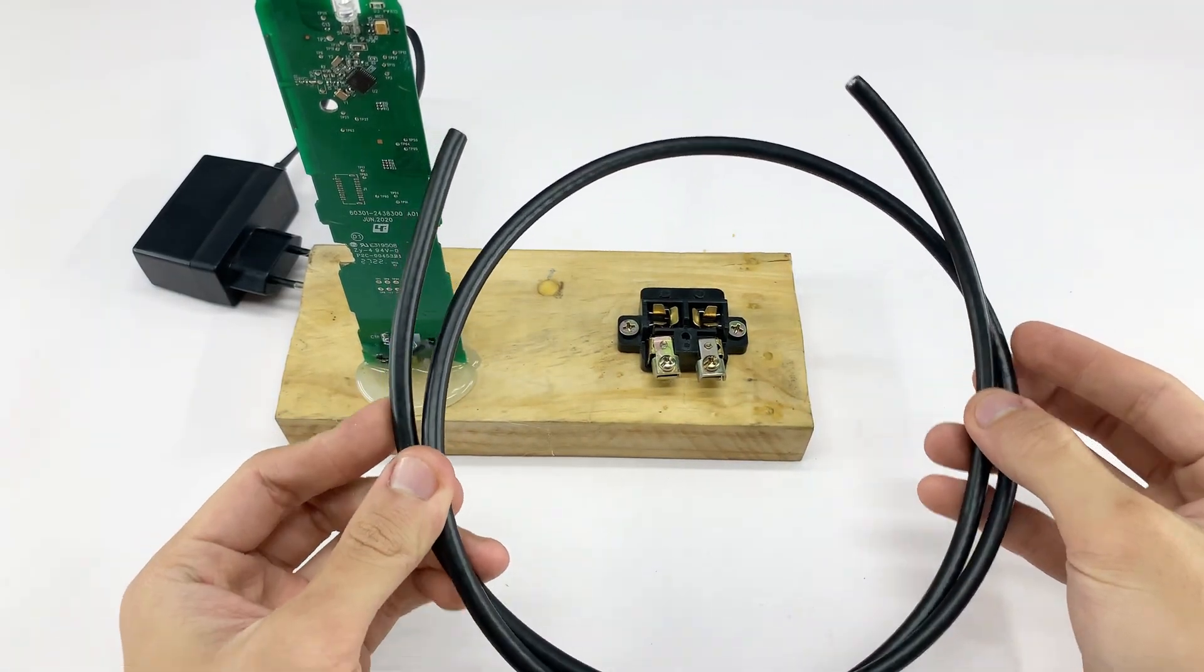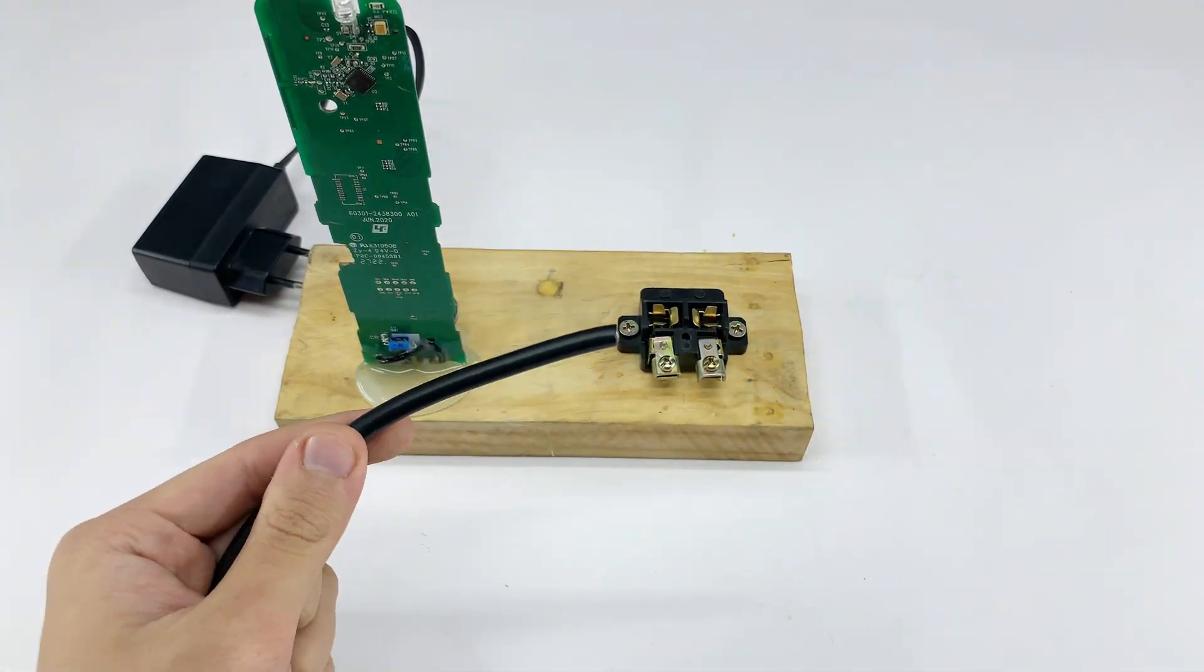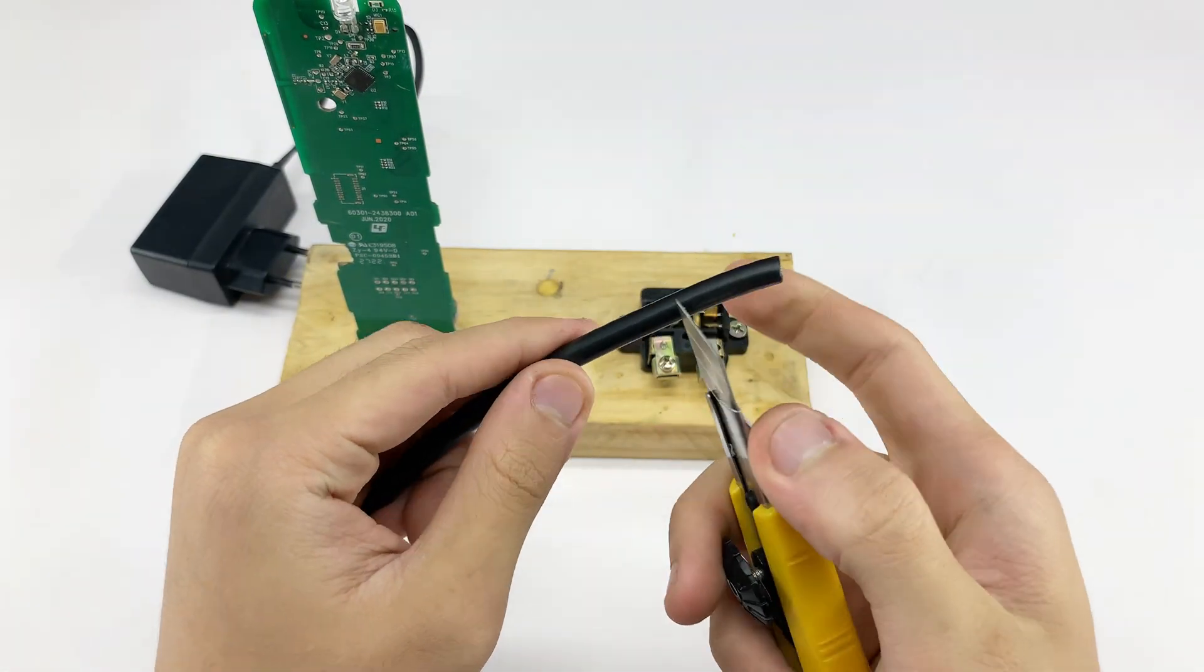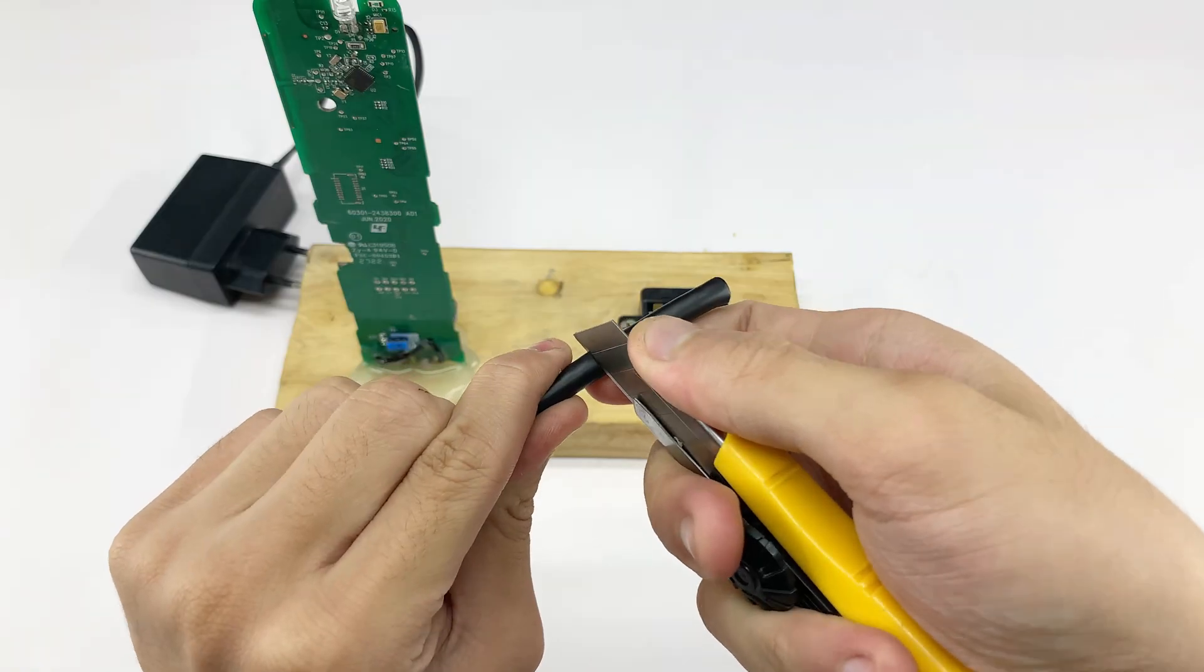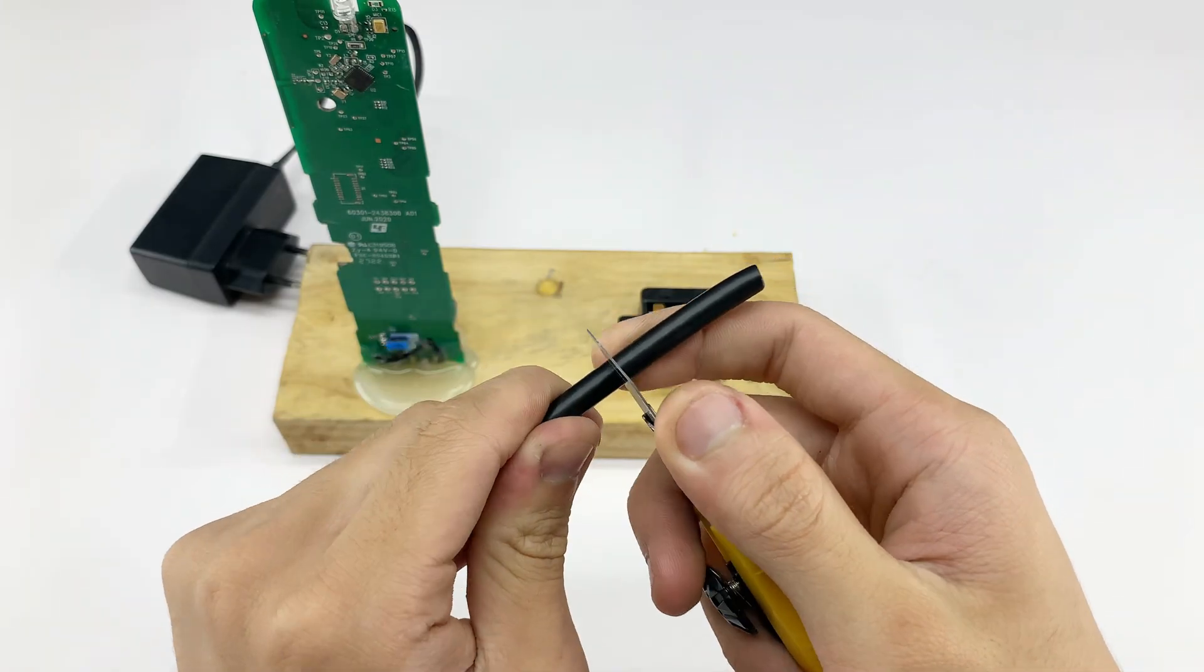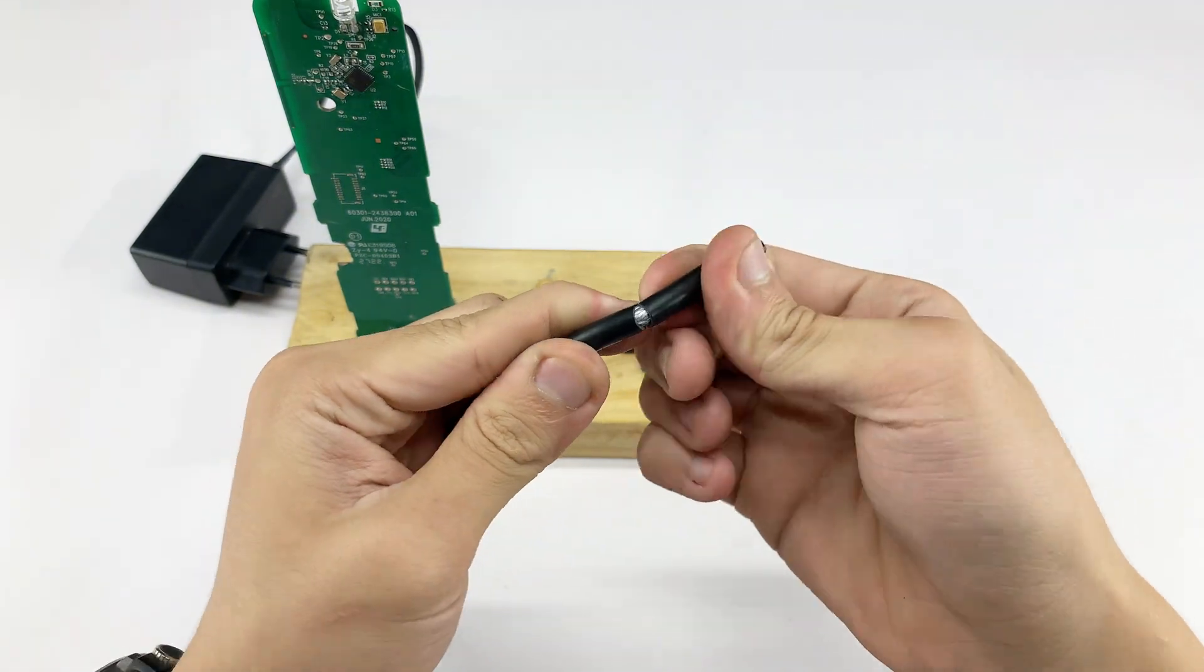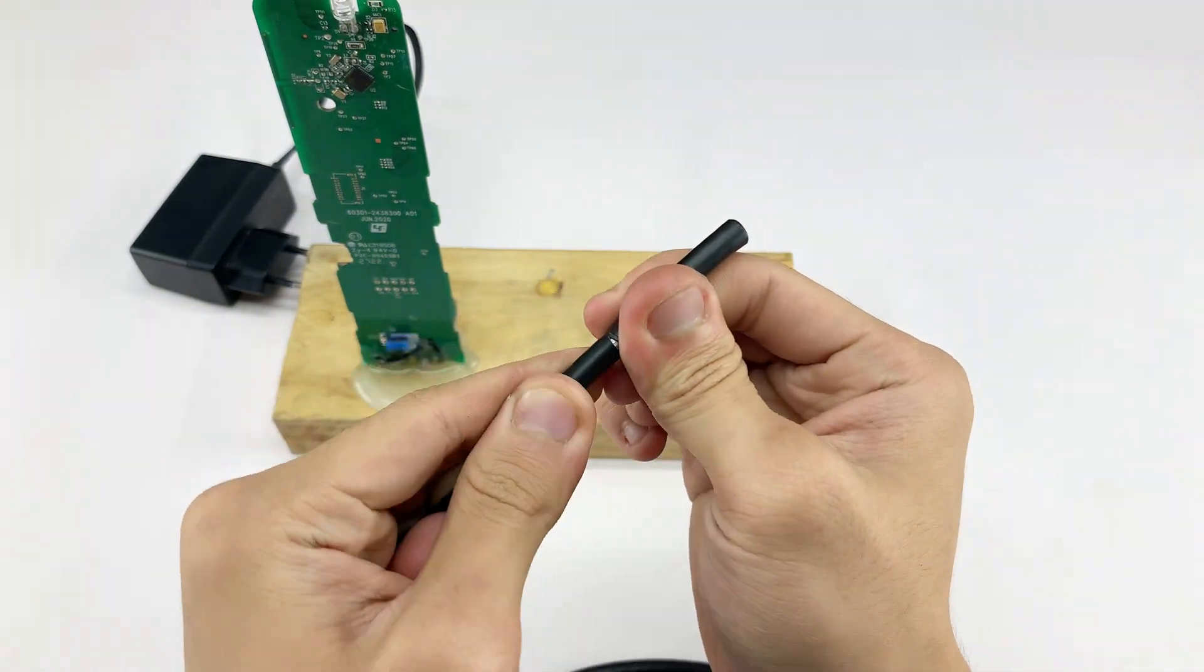Here, I have a coaxial cable. I'm carefully stripping back the outer insulation and exposing the braided shield and the central copper conductor. This is a crucial step for optimal signal transfer, as these parts are what carry the signal to and from the antenna.